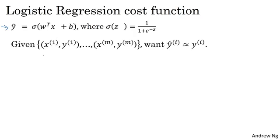To learn parameters for your model, you're given a training set of m training examples. It seems natural that you want to find parameters w and b so that at least on the training set, the outputs you have, the predictions you have on the training set, which you're going to write as y hat i, will be close to the ground truth labels y i that you got in the training set.